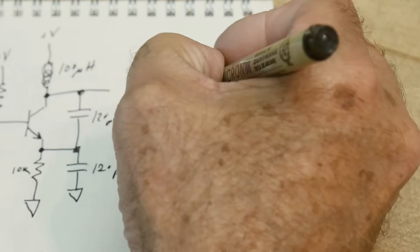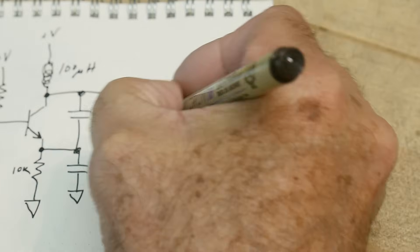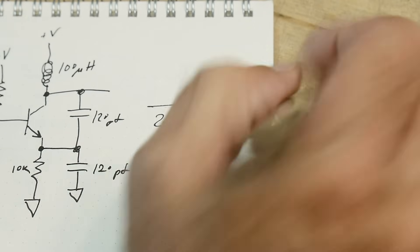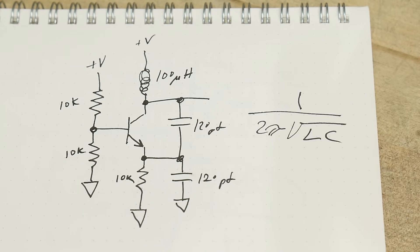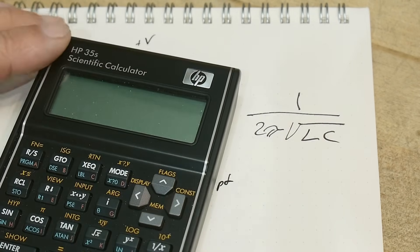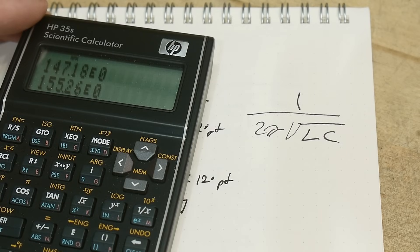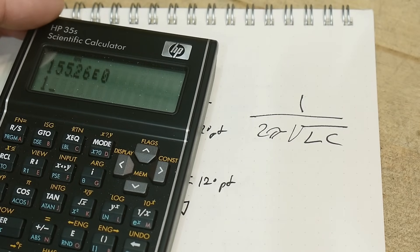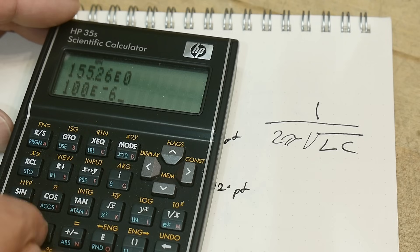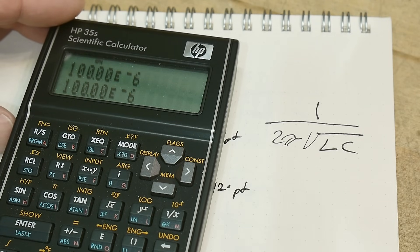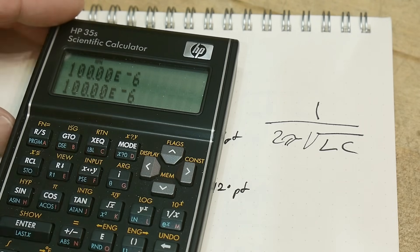Let's take a look at the math - everybody loves math. 2π√(LC) - that should be our frequency. Let's get out our calculator. We have 100 microhenries, let's start with 100 picofarads.